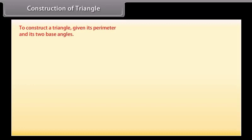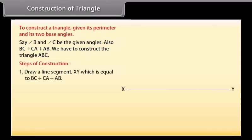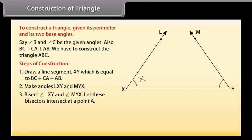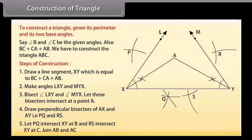Now, we will construct a triangle given its perimeter and its two base angles, say angle B and angle C. Also given is BC plus CA plus AB. Steps of construction: Draw a line segment XY equal to BC plus CA plus AB. Make angles LXY and MYX equal to the given angles. Bisect angles LXY and MYX. Let these bisectors intersect at point A. Draw perpendicular bisectors PQ and RS of AX and AY respectively. Let PQ intersect XY at B and RS intersect XY at C. Join AB and AC. Then ABC is the required triangle.